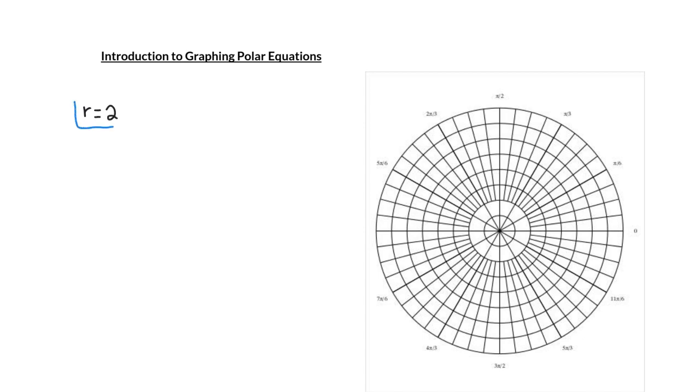So to graph the equation r equals 2, you could say, okay, the radius needs to be 2. So you start here, and this might represent where the radius is 2 and the angle is 0. But the angle is free to move, and if the angle is free to move, I can start to spin around this radius of 2.